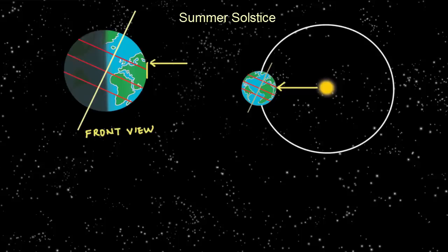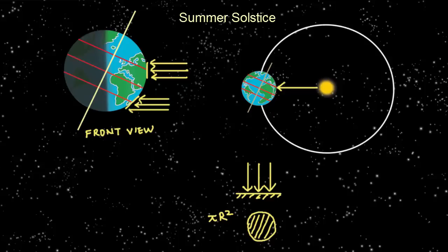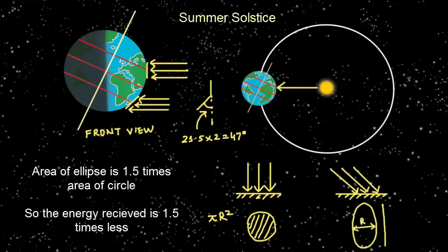Suppose we take the same situation at the Tropic of Cancer when the sun's rays are directly overhead. At this time, however, at the Tropic of Capricorn, the light will be falling at 2 times 23.5, or at 47 degrees. At 47 degrees, the area of an ellipse at the Tropic of Capricorn is one and a half times the area of the circle at the Tropic of Cancer.